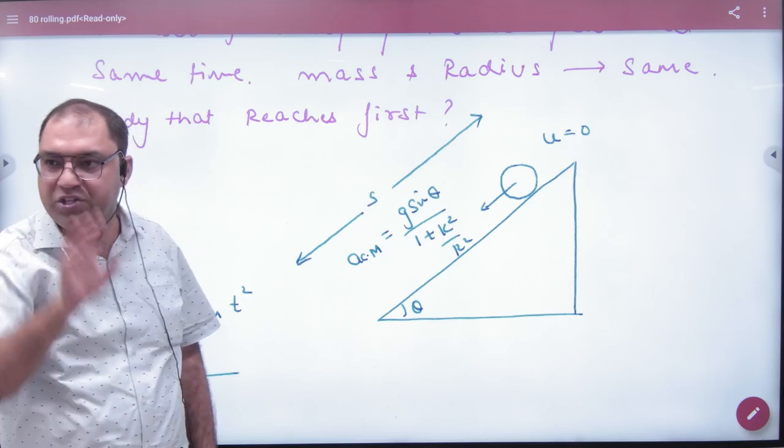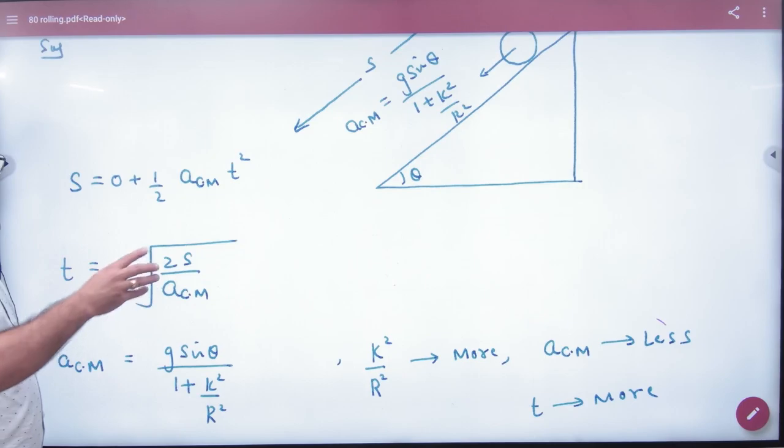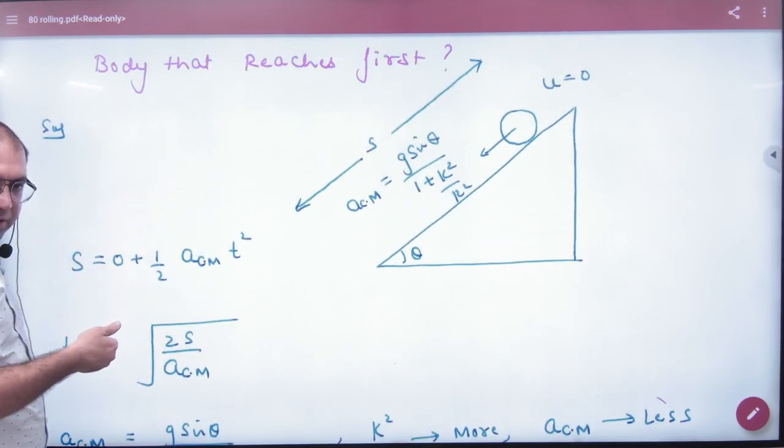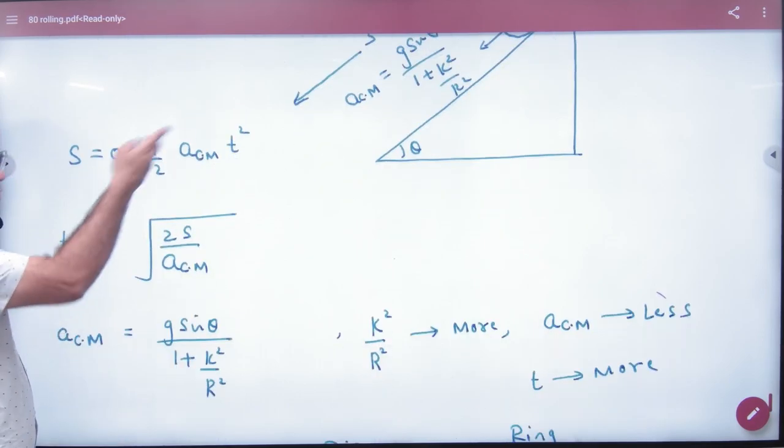One will be slow down. Like the center of mass is in translational motion, straight line motion. If we know that it is in translational motion, it has s-distance covered. So what will s-value be? Zero plus half acm t².